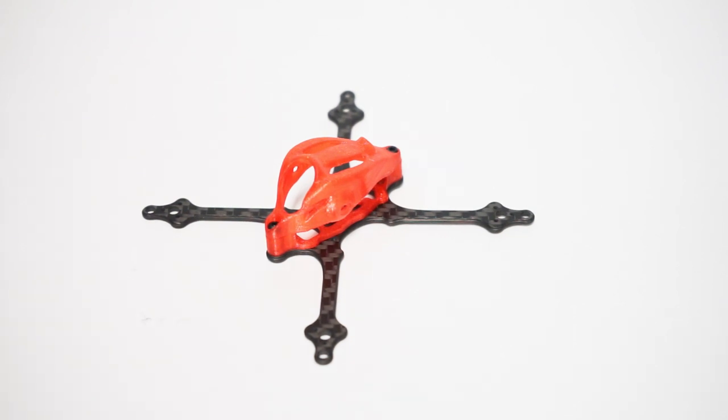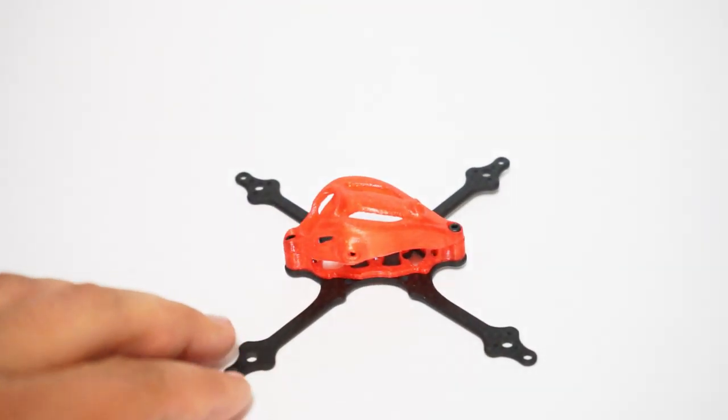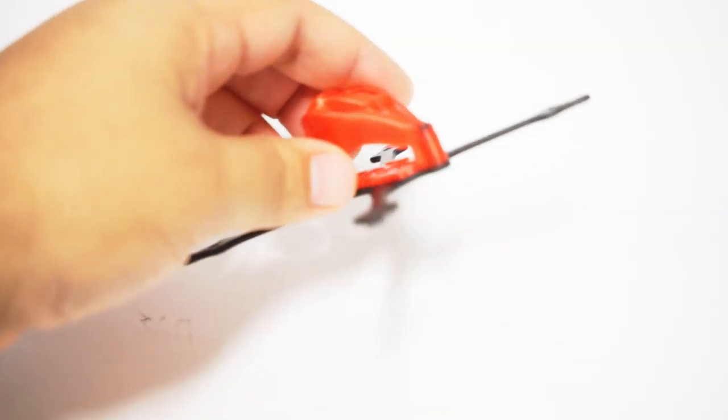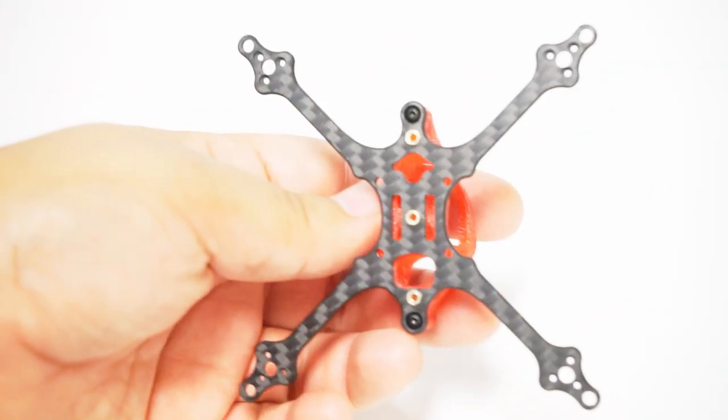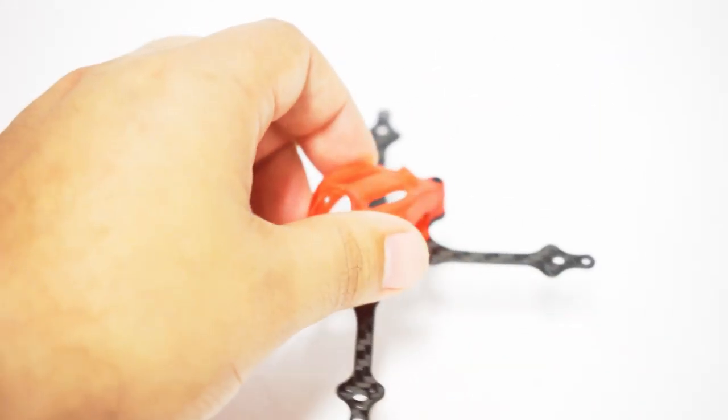John here guys, and today we're talking about the Gnarly FPV Primo. Check out this tiny 65 millimeter brushless frame that has been around. Is it before or after the toothpick? I honestly can't even recall.